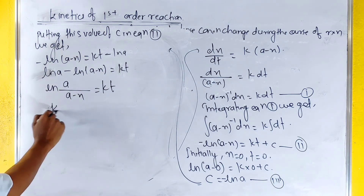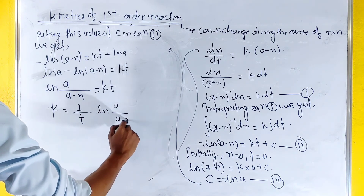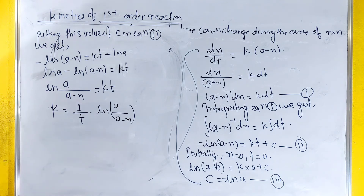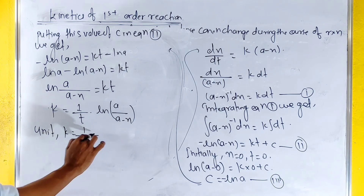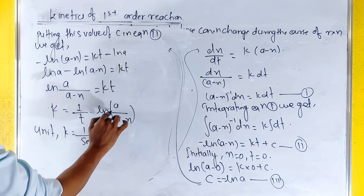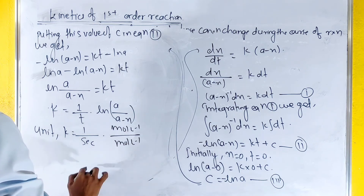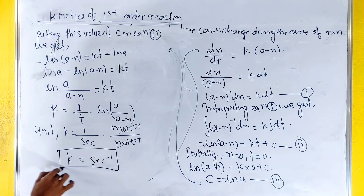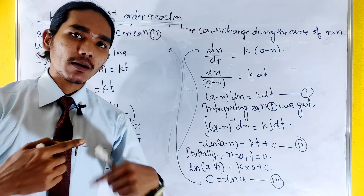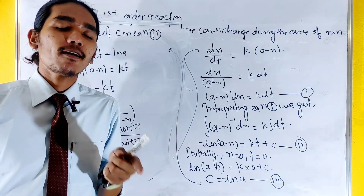So k equals 1 by t times ln(a divided by a minus x). For the unit of k: it is 1 by t, so the unit is per second. That is the unit of k for first-order reactions. Now we have to do second-order reactions.